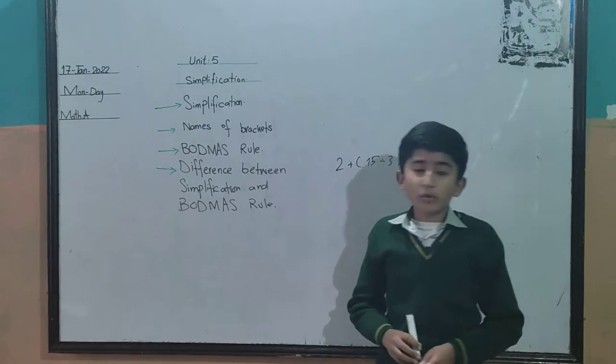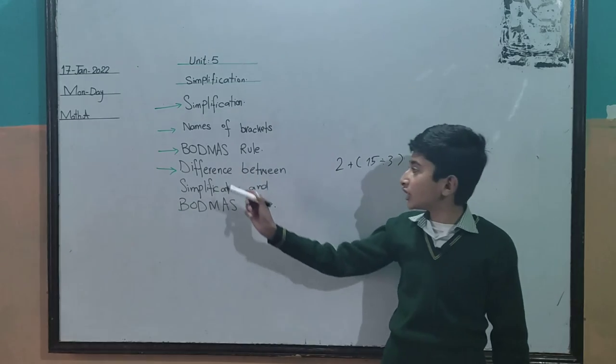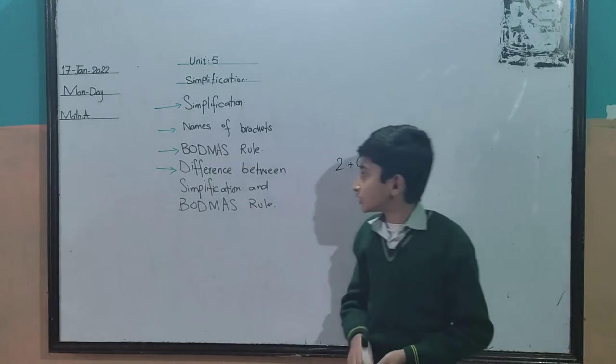Board match rule. B for brackets, O for off, D for division, M for multiplication, A for addition, and S for subtraction.